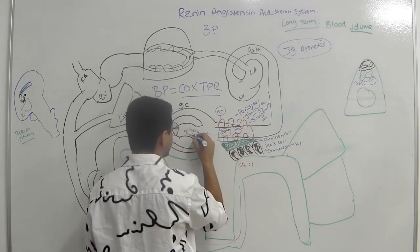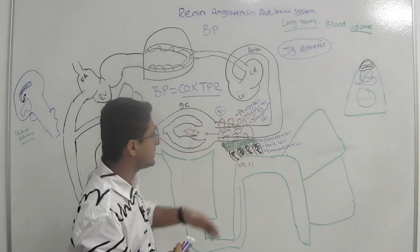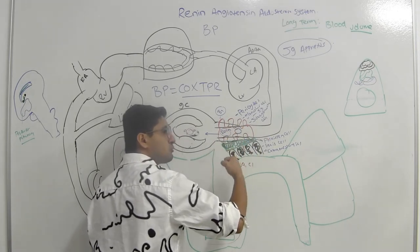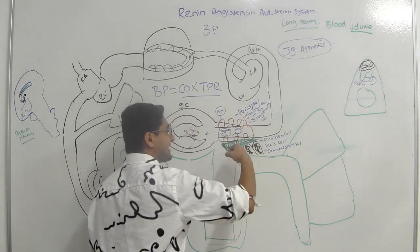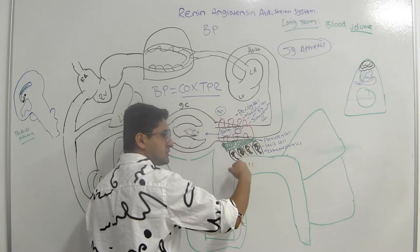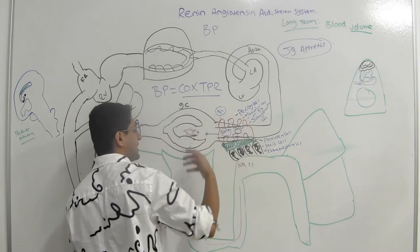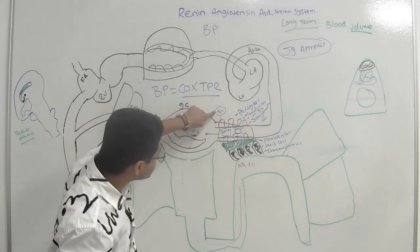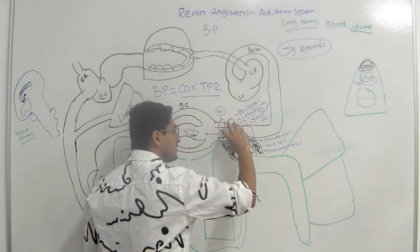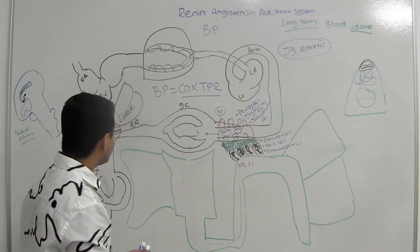A third mechanism: when blood perfusion pressure is low, the arterioles themselves produce local metabolites like endothelin and thromboxanes, causing further constriction. So the three main reasons for renin release are: sympathetic tone, decreased perfusion pressure, and decreased sodium/chloride delivery to the macula densa. Renin is an enzyme — once released, it enters the circulation.